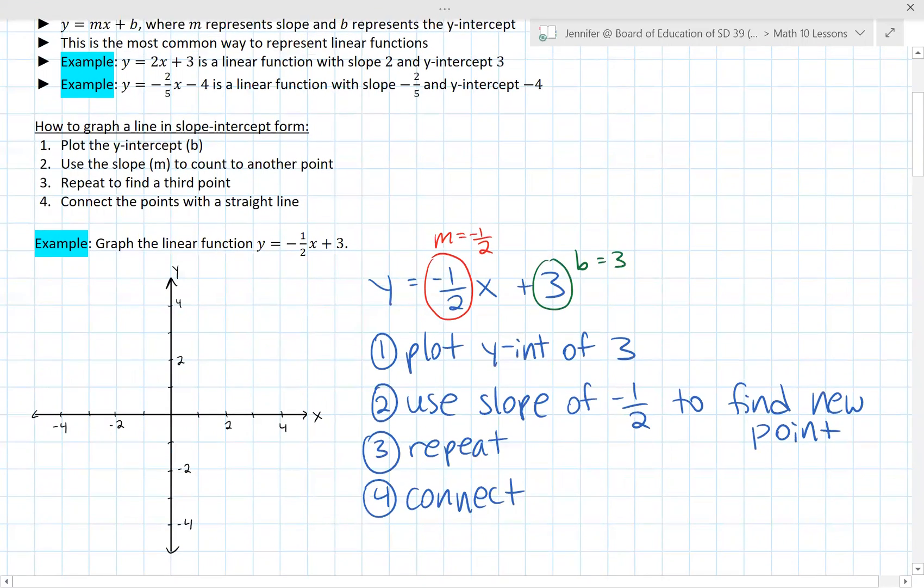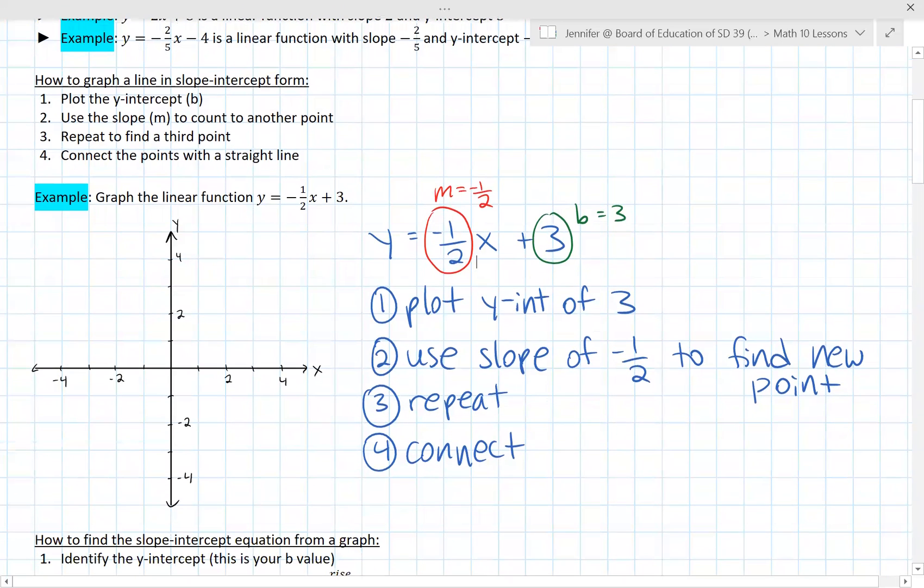So we'll try this example. We want to graph the linear function y equals negative 1/2 x plus 3. We know that our m is negative 1/2 because it's the coefficient in front of x and then our y-intercept or our b is 3 because it's the constant on its own. That's our m, that's our b. So the first step is to plot our y-intercept of 3. That would be right here. Then we're going to use our slope of negative 1/2 to find a new point. So we have to go down one over two, down one over two, because you want at least three points.